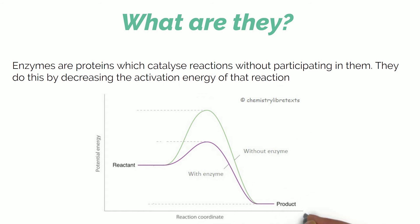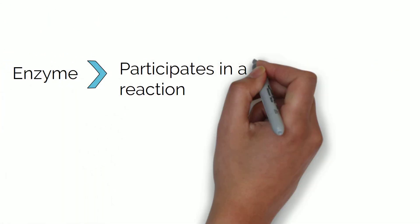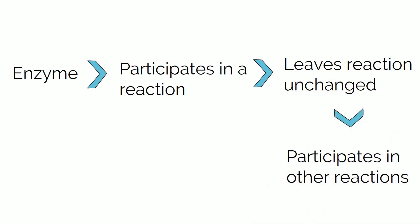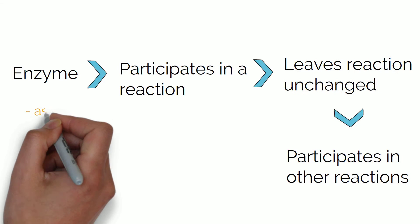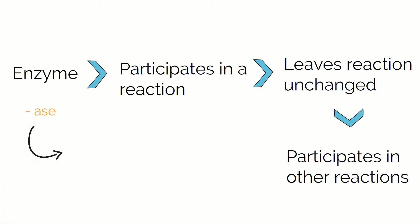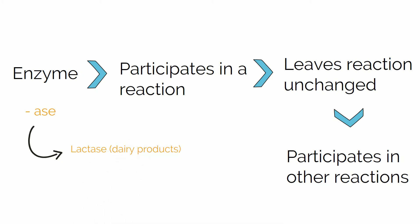Looking at this graph, you can see that without enzymes the activation energy required would be much higher. After catalyzing the reaction, the enzymes remain unchanged and can be reused in other reactions. An easy way to identify enzymes is by their name — usually when you hear about a protein that ends in '-ase' it is an enzyme, such as lactase, which helps break down lactose from dairy products.